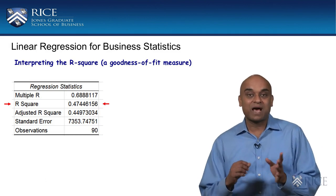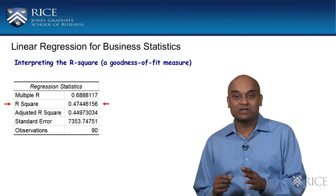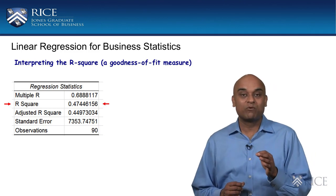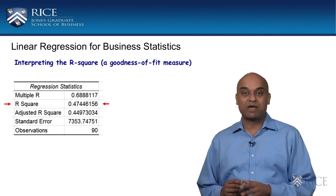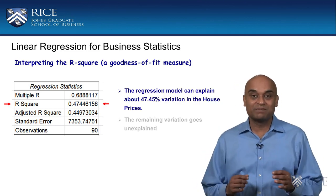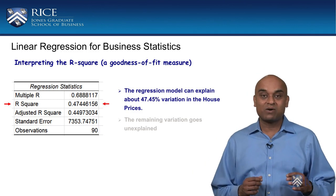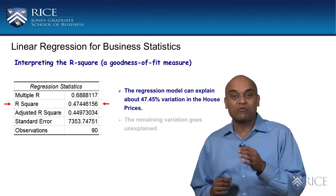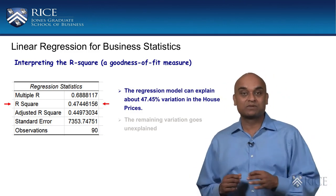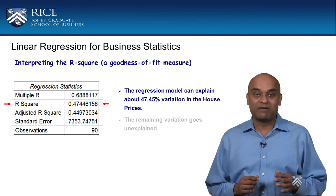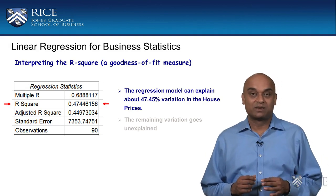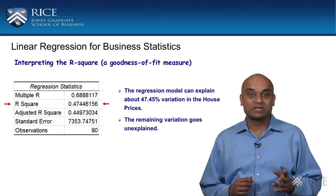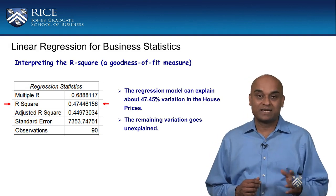In our example, the R square rounded to 4 decimal places is equal to 0.4745. This is interpreted as implying that our regression model can explain about 47.45 percent of the variation in the Y variable, which is house prices. The remaining variation goes unexplained.